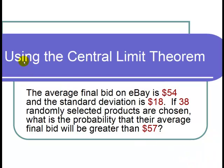This is a video on using the central limit theorem. The question states, the average final bid on eBay is $54 and the standard deviation is $18. If 38 randomly selected products are chosen, what is the probability that their average final bid will be greater than $57?